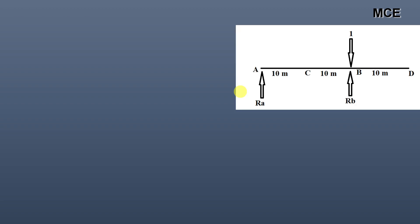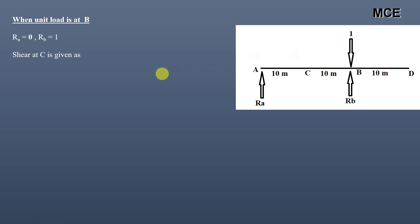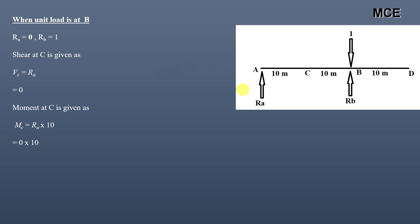Now place the unit load at B. Taking the moment about B: RA × 20 = 0, so RA = 0. From vertical equilibrium, RB = 1. Shear at C: cutting the section at C, the only force in portion AC is RA, so shear at C = RA = 0. Moment at C = RA × 10 = 0. So when the unit load is at B: RB=1, shear at C=0, moment at C=0.